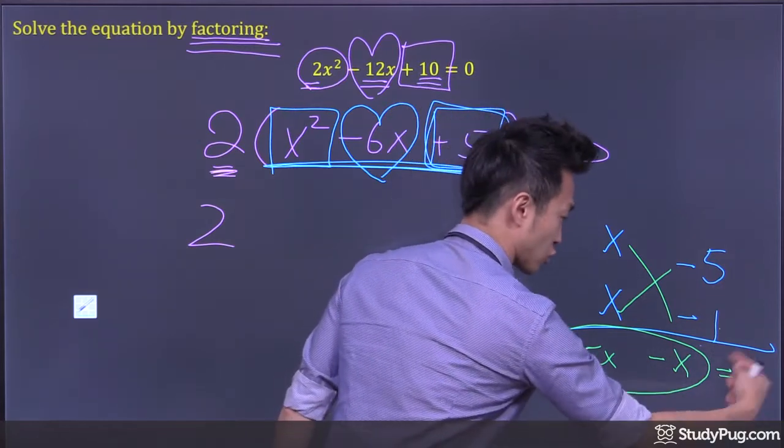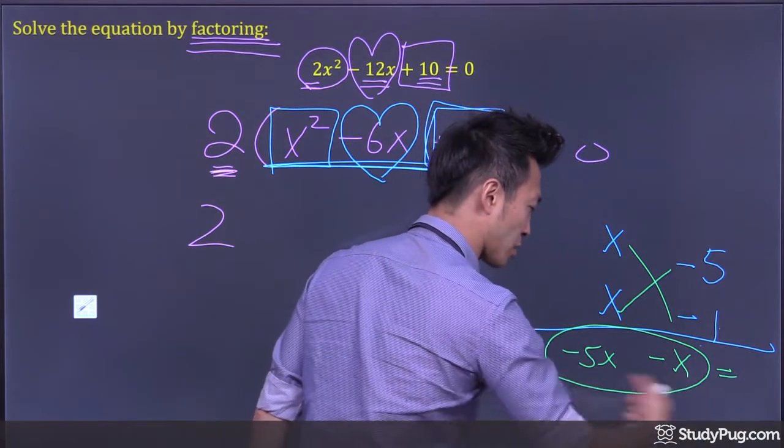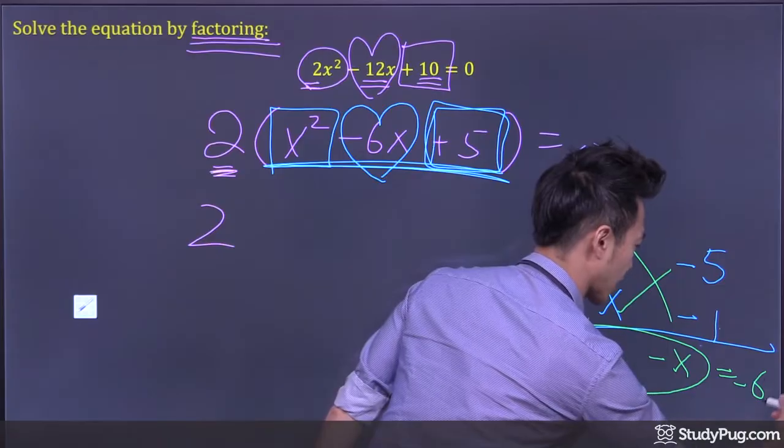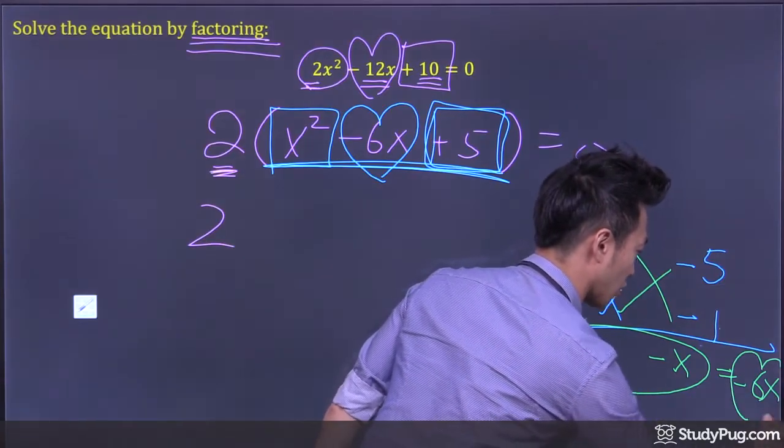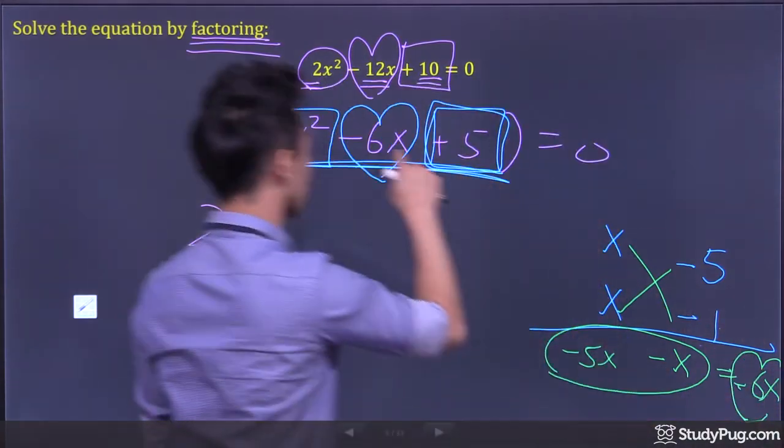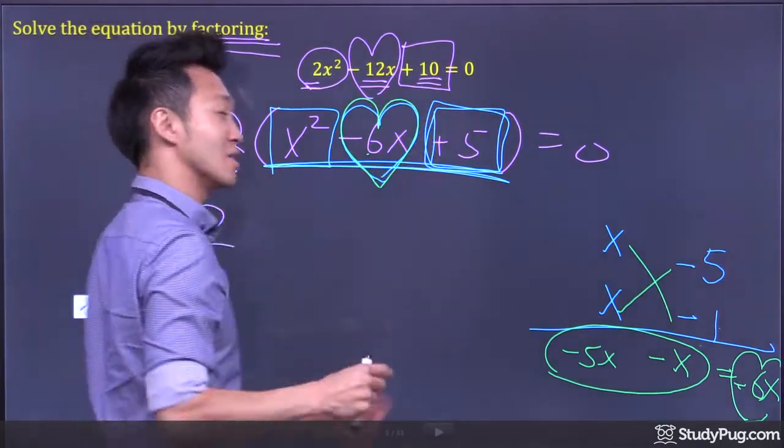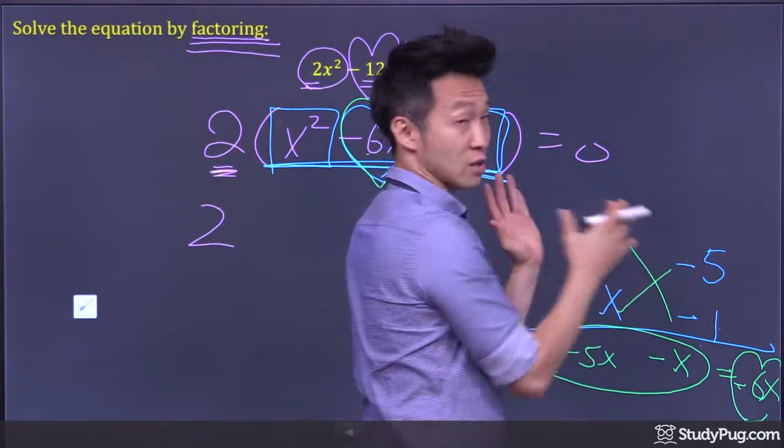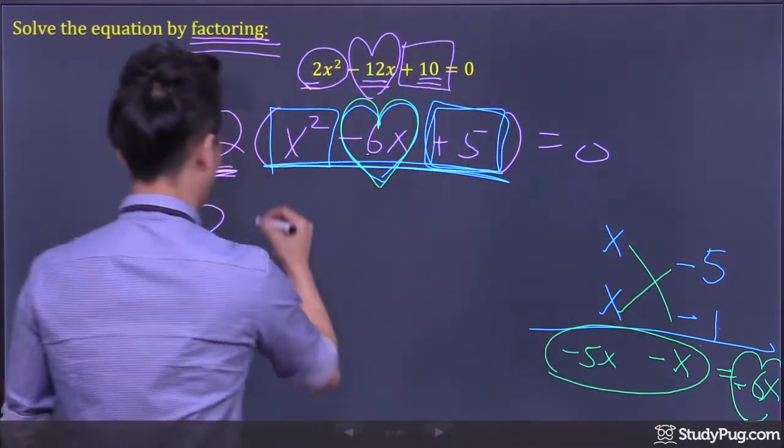So now we have to check here. Combine everything on the bottom line, we have -6x. Now you're going to ask yourself, does this match the middle term? Yes, -6x. That means we are good. That means our factoring is correct.